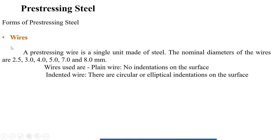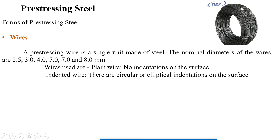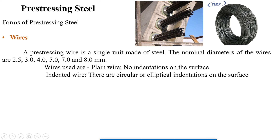Now pre-stressing steel: it can be wires, strands, or tendons. A pre-stressing wire is a single unit made of steel with nominal diameters of 2.5, 3, 4, 5, 7, and 8 mm — very small diameters. The wires are either plain wire or indented wire, which has small indentations on the surface for better bond. The wire diameter is about the size of a pen — 2 to 3 mm — very small.